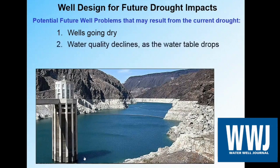The next concern would be water quality decline. If we have a stratum of the aquifer that is of poor quality — for example, in an area with agricultural history, we may have high nitrate in the shallow aquifer. We seal that off with an annular seal in our well. But if the water table drops in the future and that poor quality water drops with it down to where it's adjacent to our screened interval, we can begin to have water quality problems. So how do we address that?